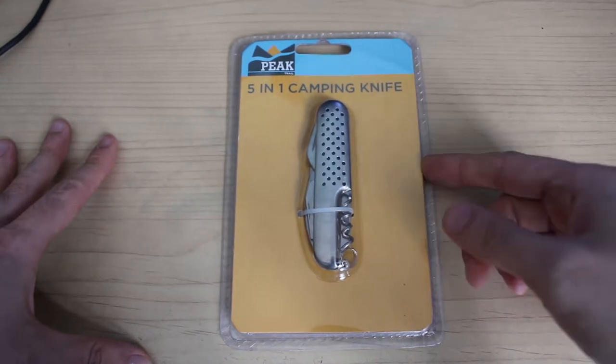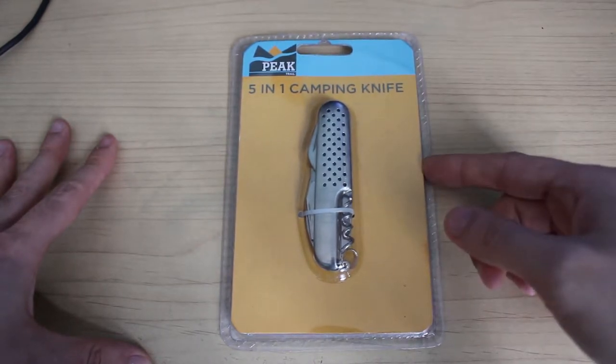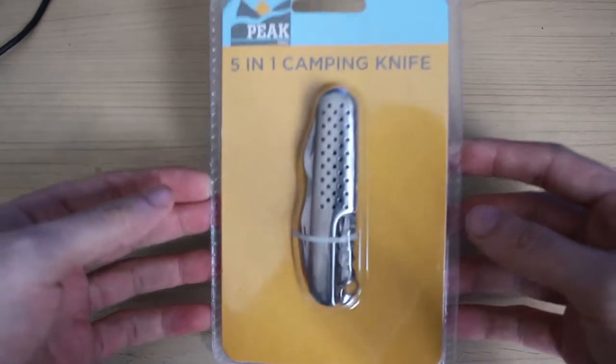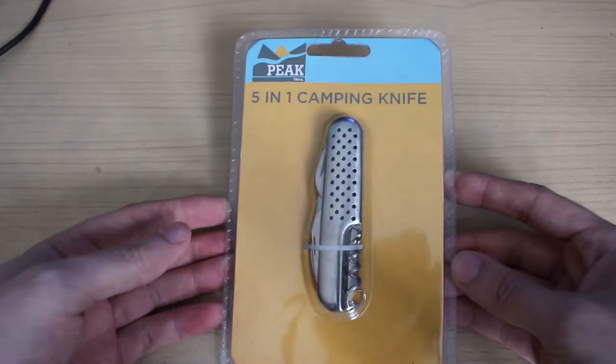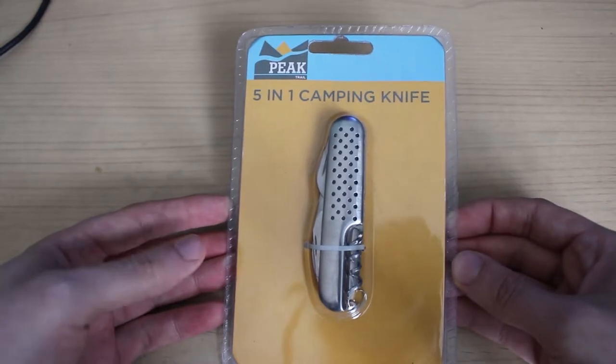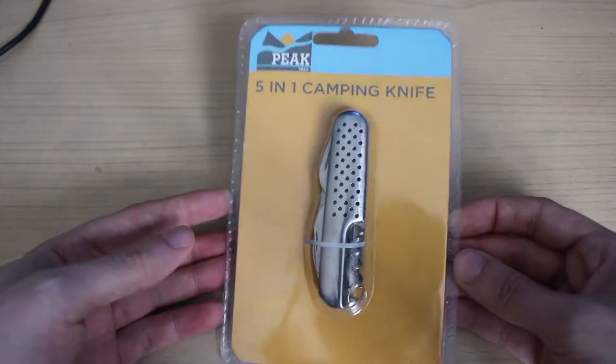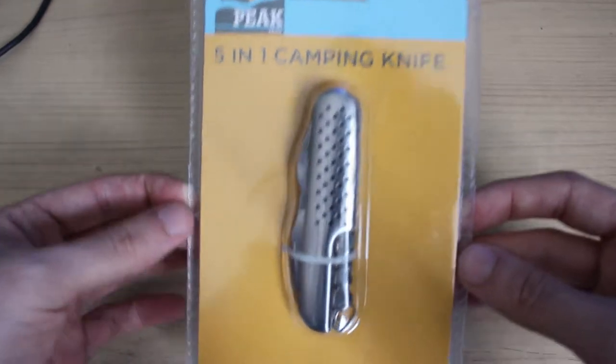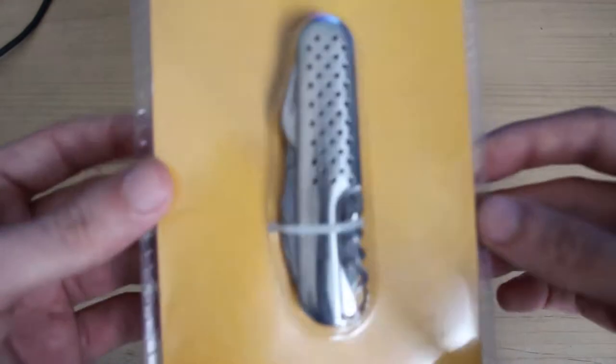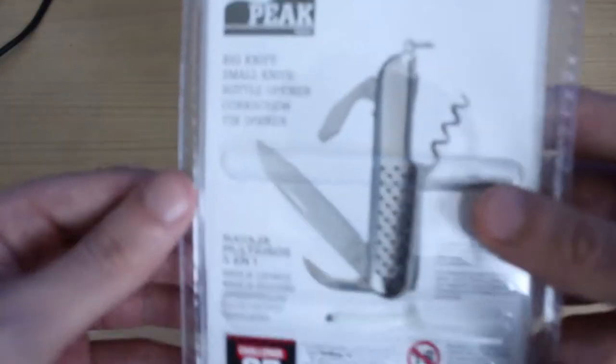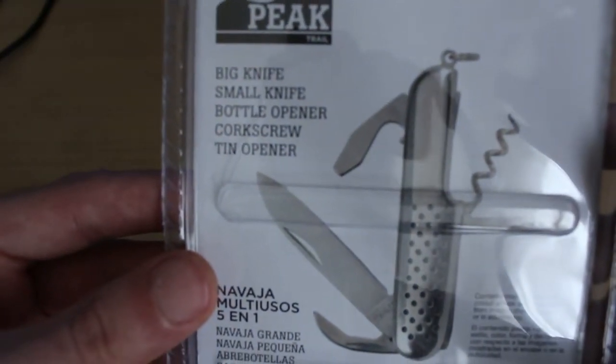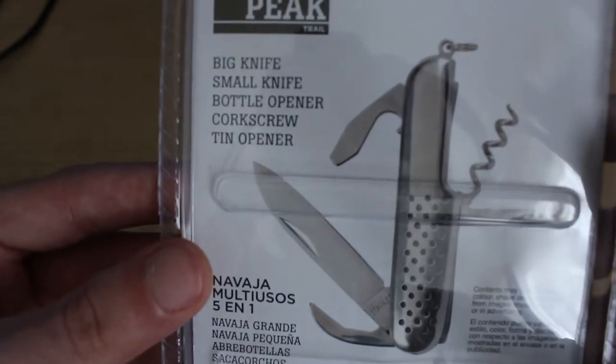So this is a 1 pound knife from Poundland. I don't generally do cheap tat, but you guys wanted more knife reviews and I've had to pick up the absolute cheapest knife ever. It's a camping knife, a multi-use knife, so it's 5-in-1. In the back it says exactly what 5-in-1 does, which is a big knife, a small knife, bottle opener, corkscrew, and tin opener.